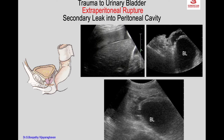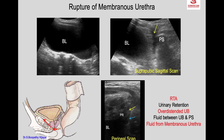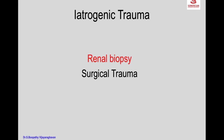This is a case of extraperitoneal rupture with secondary leak into the peritoneal cavity. You see the escape of fluid and urine from the bladder to the extraperitoneal space.